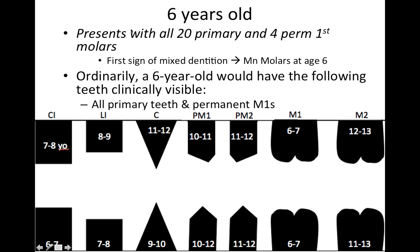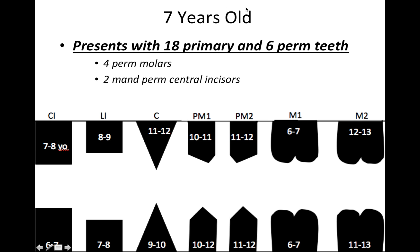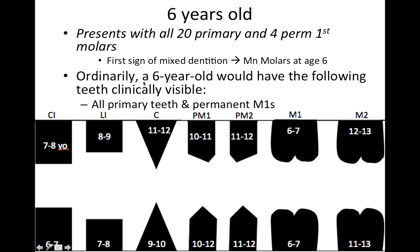At six years of age, you're going to have 20 primary teeth and four permanent first molars. The first sign of a mixed dentition is generally at six years of age when those mandibular molars come in — remember those are not succedaneous teeth. Ordinarily a six-year-old would have all primary teeth and the permanent first molars clinically available. Note that what I've listed here is not exactly the full mixed dentition picture, just a guide to help you follow along.